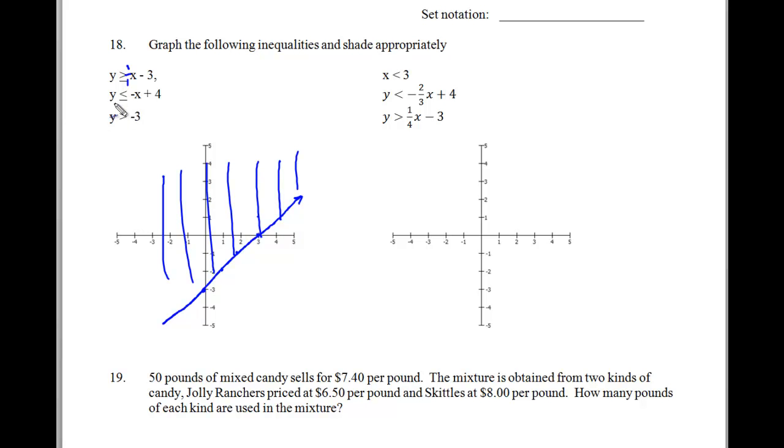Alright, now, the next graph is going to be y is less than or equal to negative x plus 4. Let me change colors here so you can see the different lines. So, this is going to start off at 4. The slope is down 1 over 1, so down 1 over 1, down 1 over 1, and this is less than or equal to, so this is another solid line going down 1 over 1. And since it's less than, we'll be shading in the downward direction like so.